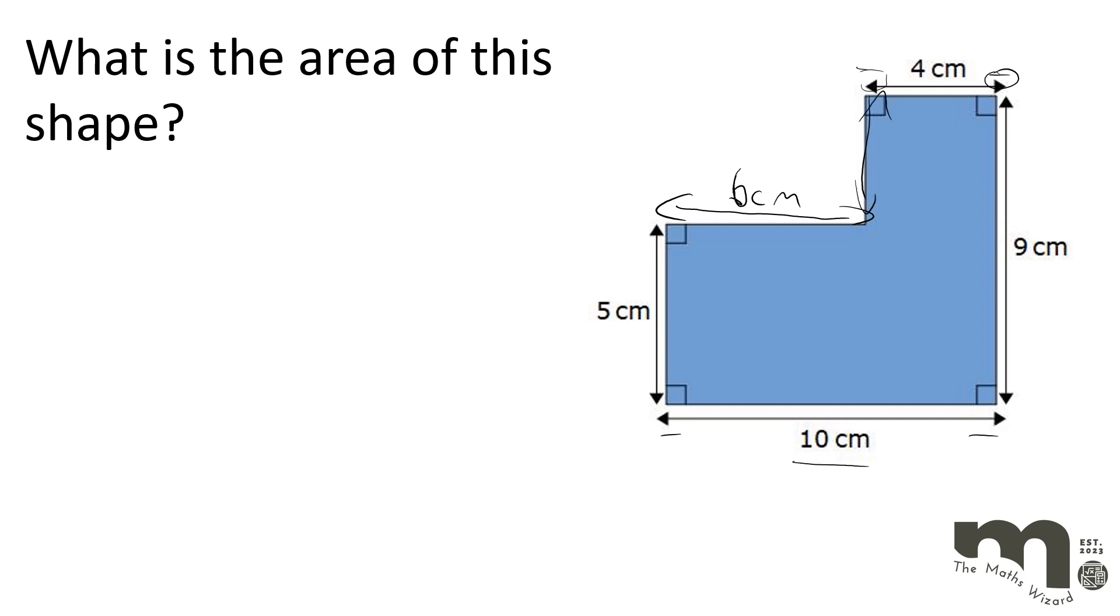And then here we're doing that 9 take away 5, this will tell us that this is 4 centimeters just here. So that will then help us to do both the area and the perimeter. So let's have a